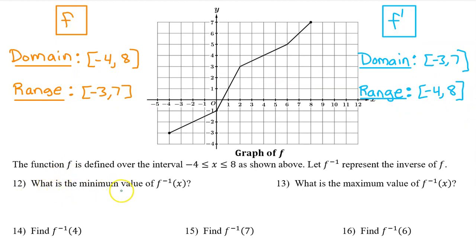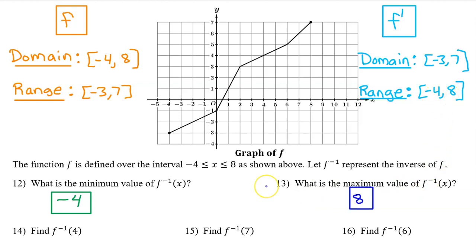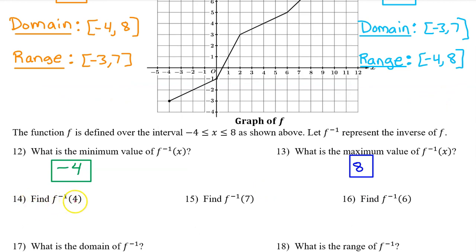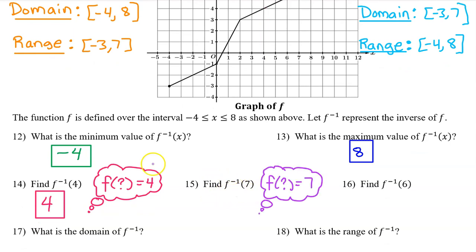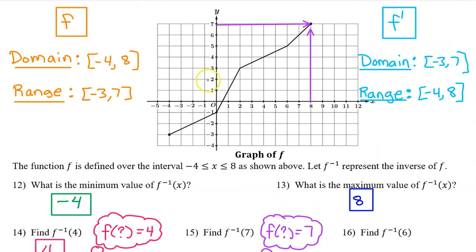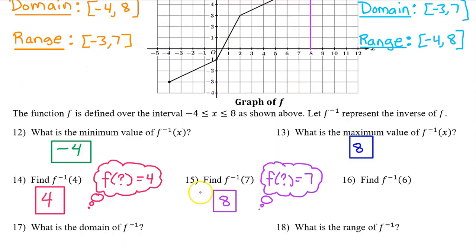Number 12: the minimum value of f inverse is the lower limit of the range, which is negative 4. Number 13: the maximum value is the upper limit of the range, which is 8. Number 14: find f inverse at 4. Ask yourself, f at what is equal to 4? We can see that f at 4 is equal to 4. So that's the answer. Number 15: find f inverse at 7. Ask yourself, f at what equals 7? We can see that f at 8 is 7. So that's the answer.